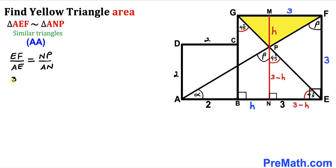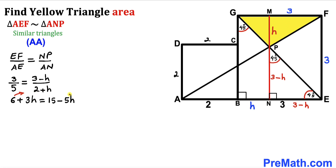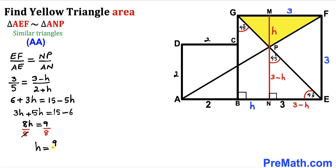Cross-multiplying gives us 3 times (2 plus h) equals 5 times (3 minus h), which becomes 6 plus 3h equals 15 minus 5h. Moving 6 to the right and 5h to the left: 3h plus 5h equals 15 minus 6, so 8h equals 9. Dividing both sides by 8, our height h turns out to be 9 divided by 8.